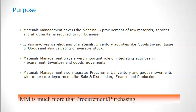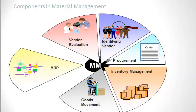Material Management also integrates procurement, inventory, and goods movements with core departments like Sales and Distribution, Finance, and Production. The material requirement planning, MRP, is the first phase in procurement. Procurement starts with the requirement triggered by MRP. The requirement can be dependent — like sales order-based or production order-based — or independent, like a stationary requirement triggered on a general calendar basis.